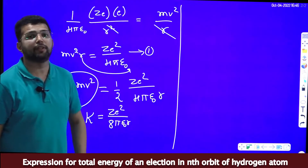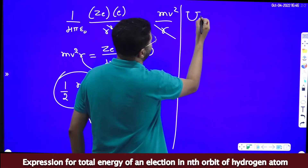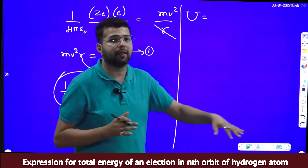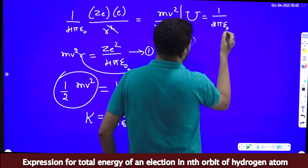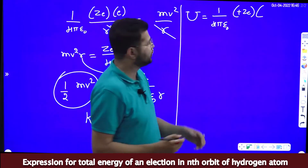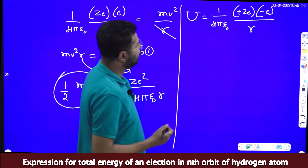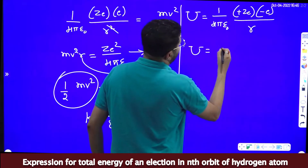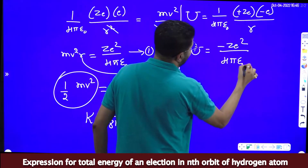Now we derive an equation for potential energy. The general equation is U = (1/4πε₀) × Q₁Q₂/R. Here Q₁ is the charge of the nucleus, which is +Ze, and Q₂ is the charge of the electron, which is −e, divided by R. So potential energy U = −Ze²/(4πε₀R).